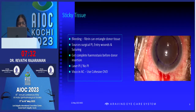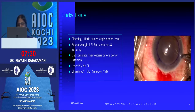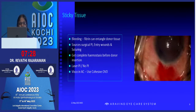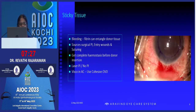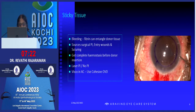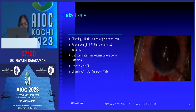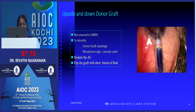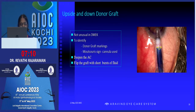Sticky tissue is a major problem. Whenever you get bleeding, always wait for the bleeding to completely stop and then go ahead with tissue injection. And as Dr. Fogla mentioned, we have to verify this open edge before injecting — only then can we get the correct orientation in the anterior chamber.